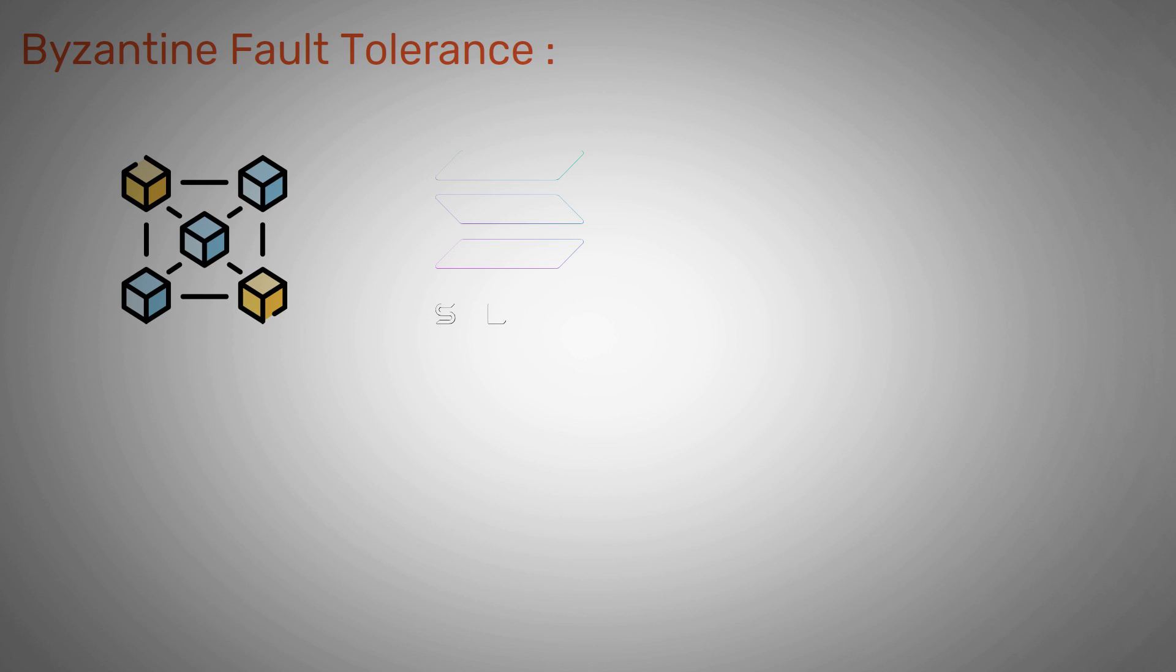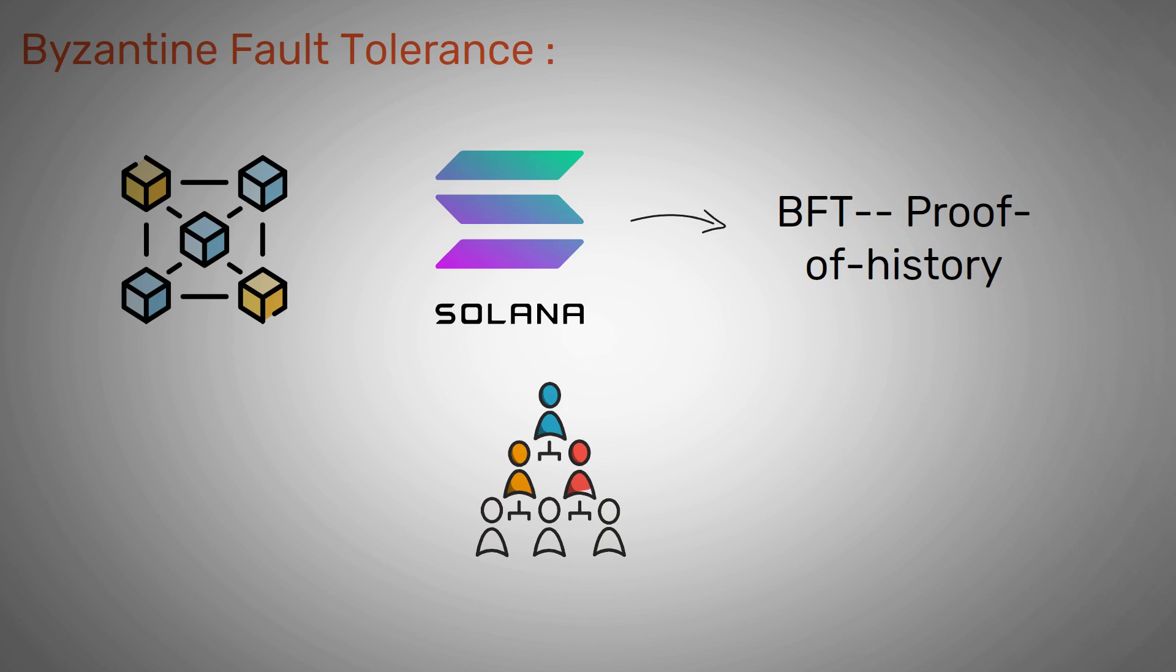Two: Tower Byzantine Fault Tolerance, also known as Tower BFT. To transmit blocks, Solana runs a Tower BFT, a Proof of History optimized system that leverages the PoH synchronized clock to achieve consensus. It operates by locking out nodes after voting a form for some time.